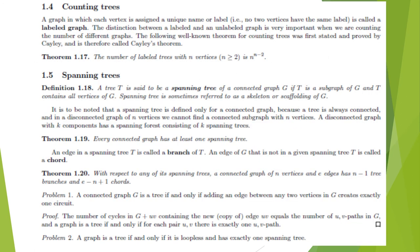Counting trees: a graph in which each vertex is assigned a unique label is called a labeled graph. The distinction between labeled and unlabeled graphs is very important when counting the number of different graphs. The following well-known theorem was first stated and proved by Cayley and is called Cayley's theorem: the number of labeled trees with n vertices, where n is greater than or equal to 2, is n raised to the power n minus 2.